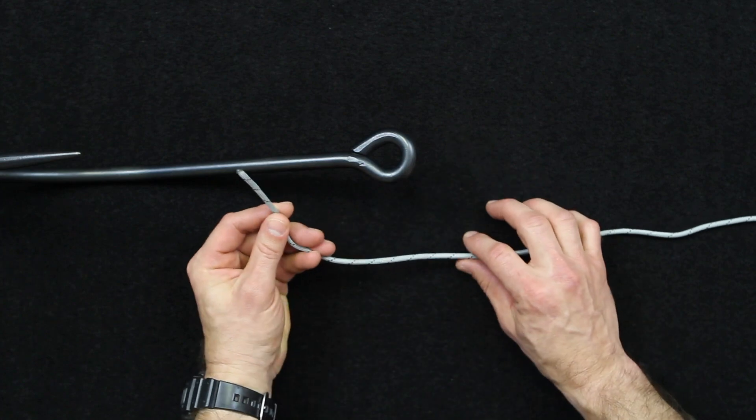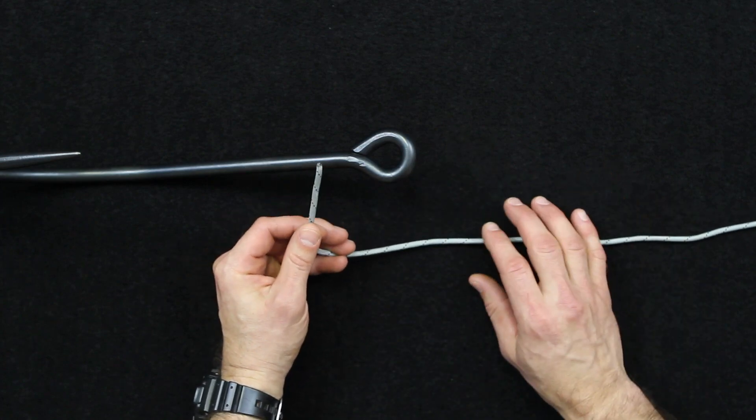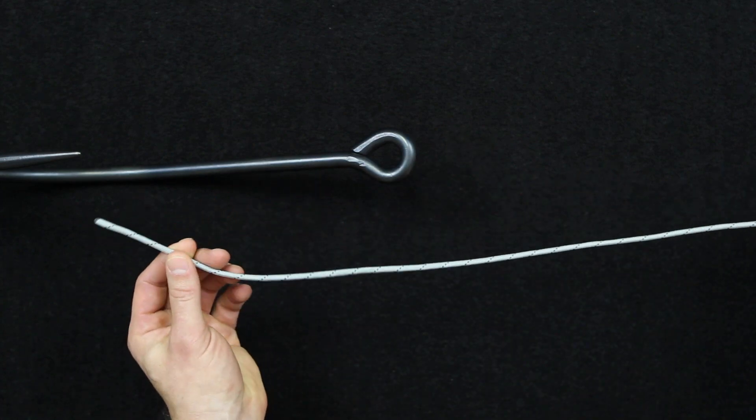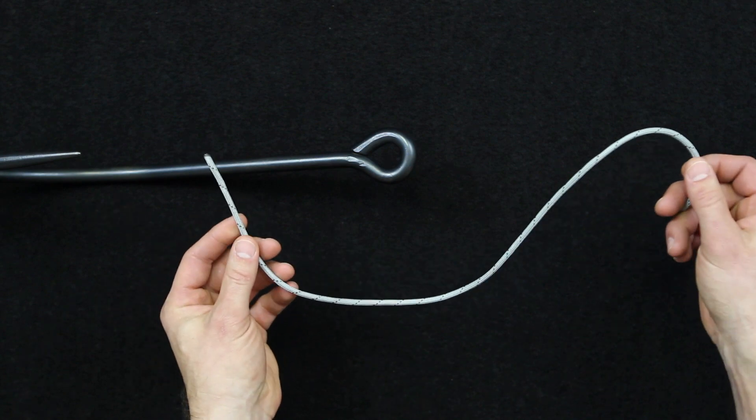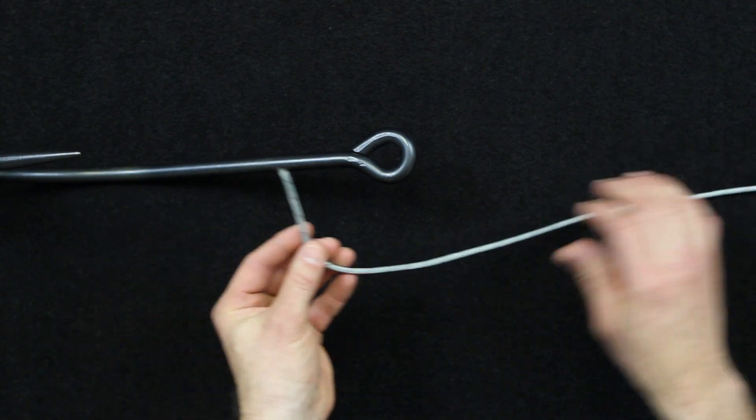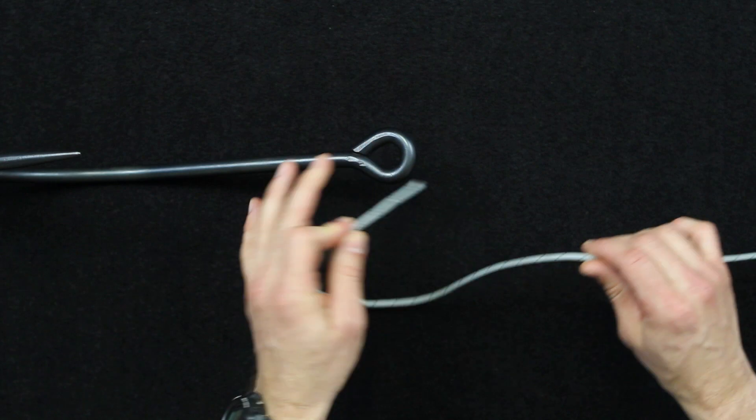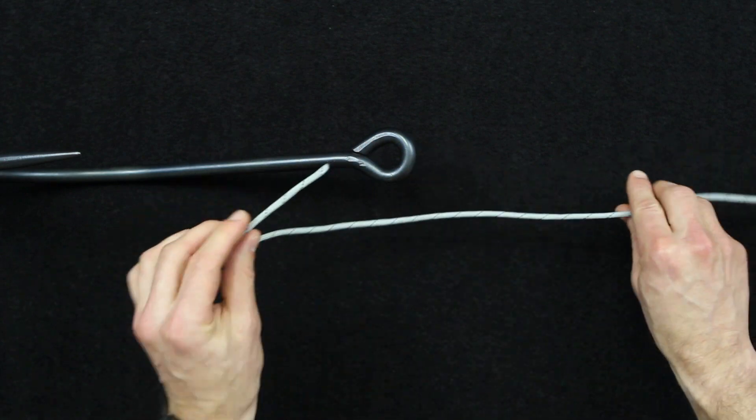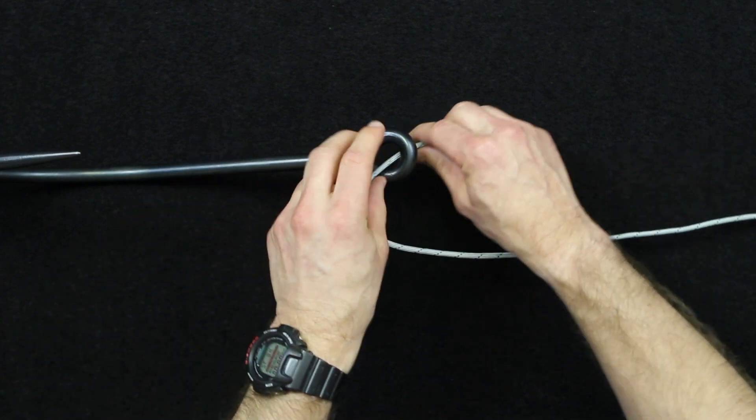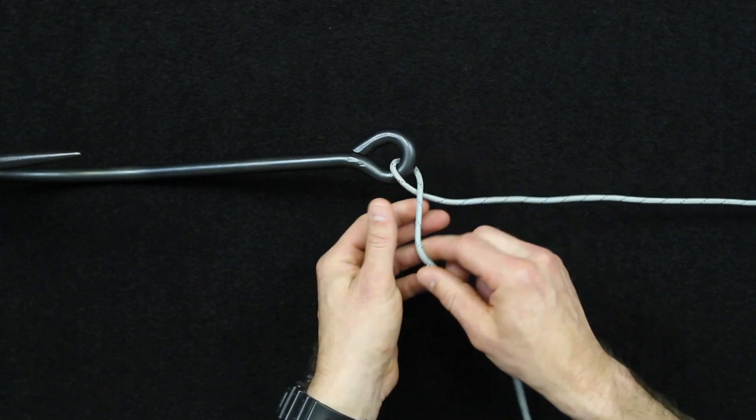Alright guys, so what we're going to start tying today is the modified clinch knot. For this you're going to need your monofilament line, which in this case I'm using paracord. I'm using a lighter color paracord so you can see exactly what we're doing with the big fishing hook here. You're going to go inside the hook eye and then start your wraps.